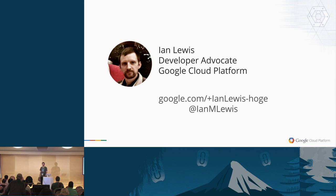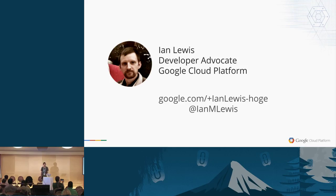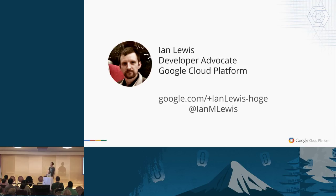My name's Ian Lewis. I'm a developer advocate at Google. I work on the Google Cloud Platform team. I'm based here in Tokyo, so if you guys ever come back, hit me up. I'm on Twitter — my ID is Ian M Lewis.